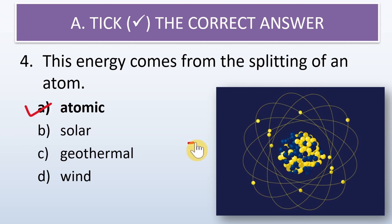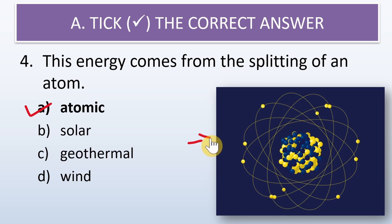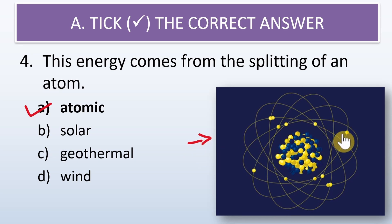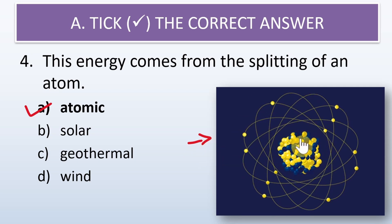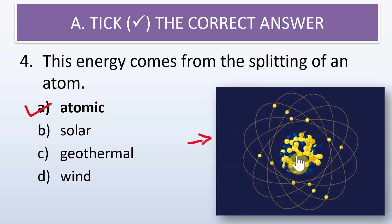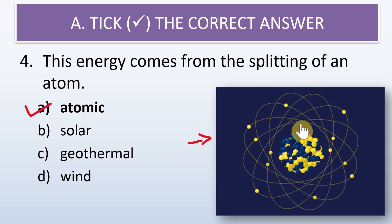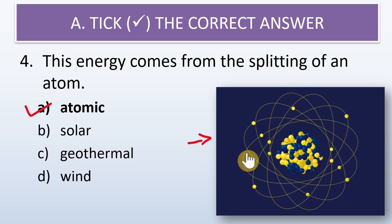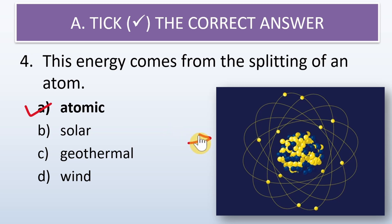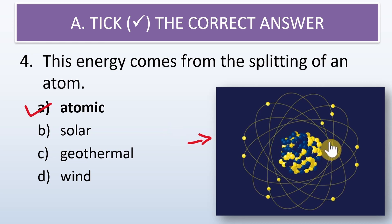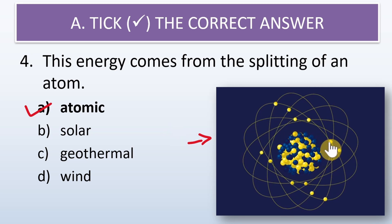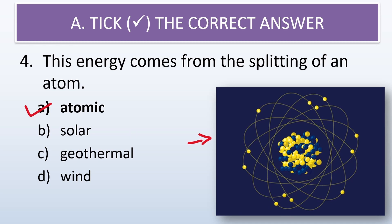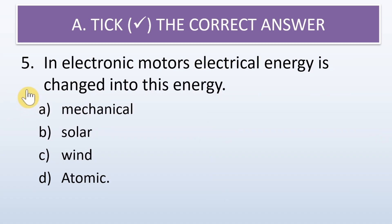Here there is a diagram of an atom. In an atom there is a nucleus at the center, and there are electrons revolving around the nucleus. Once this atom gets split up, it gives rise to atomic energy.